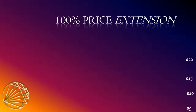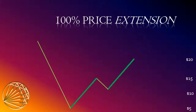The price extension routine helps to identify support and resistance levels. In this example we're going to identify a 100% extension. The trend appears to be down with a little rally and we're looking for selling opportunities. We're wondering if $20 would be an appropriate level to sell at. To help identify if $20 is a potential resistance level and a good place to put our sell order, we can use the price extension technique. Notice that the first rally against the downtrend was from $5 to $15.